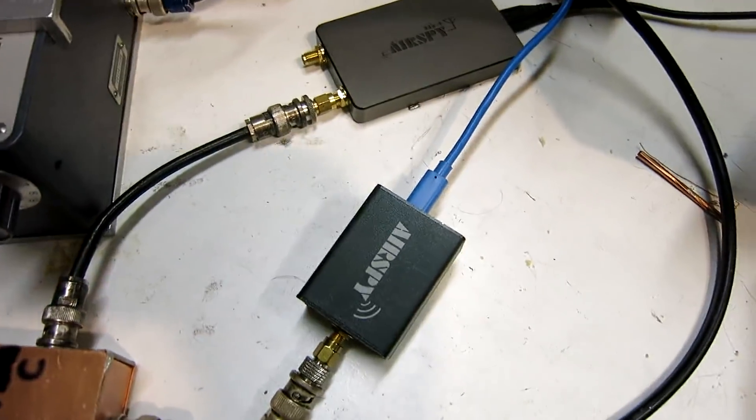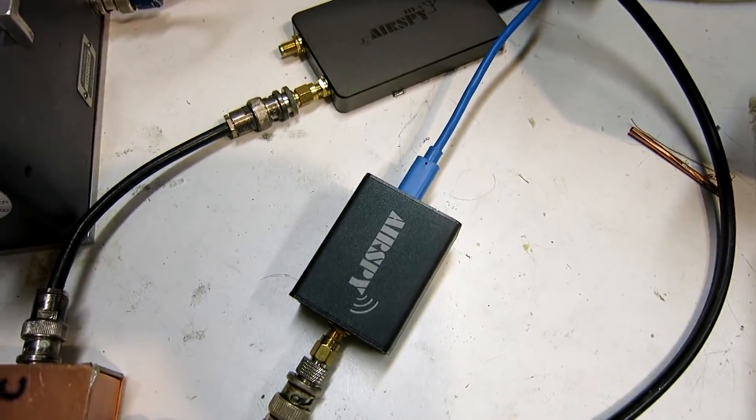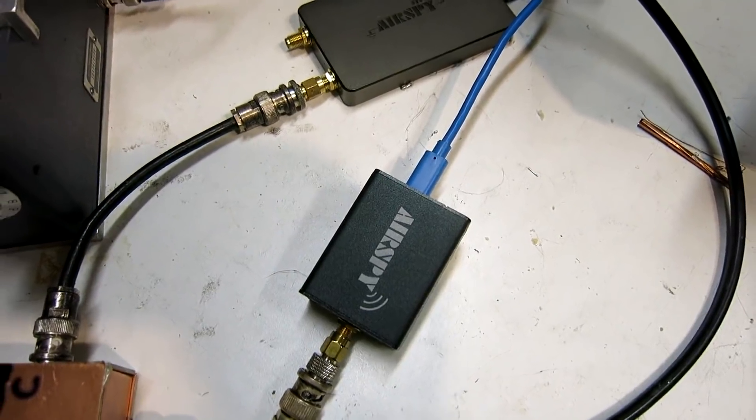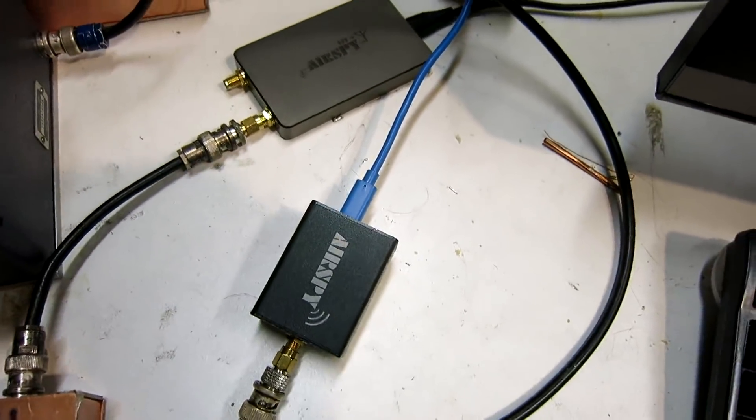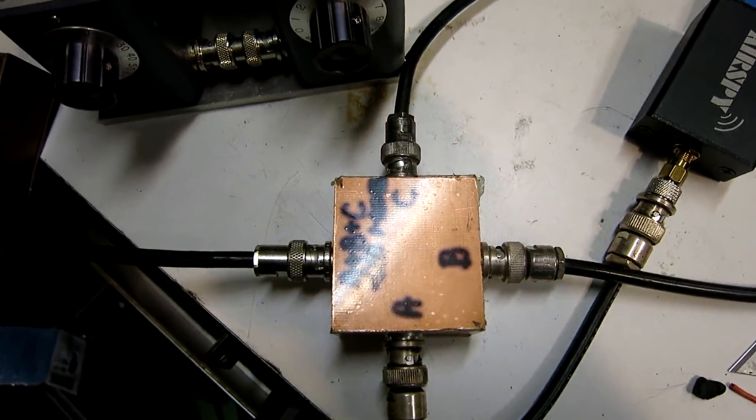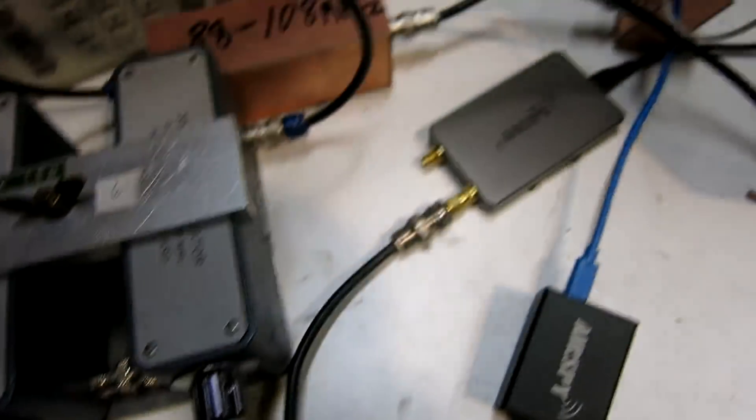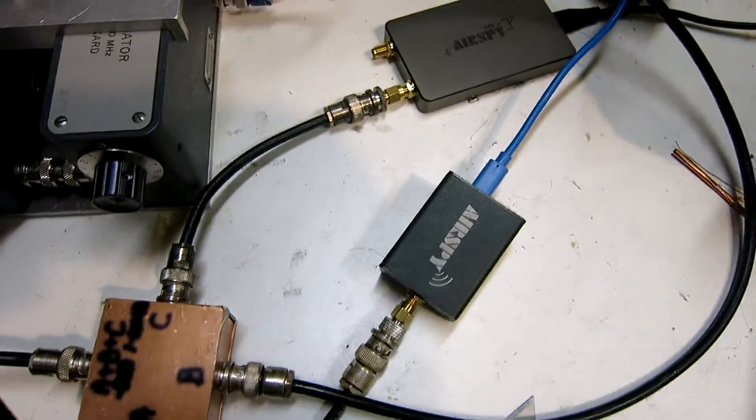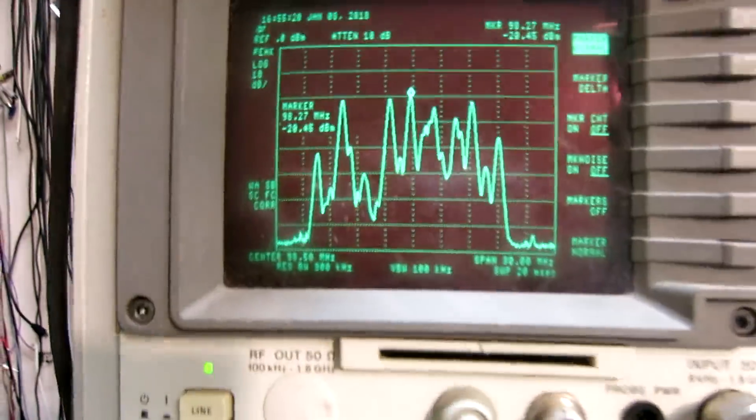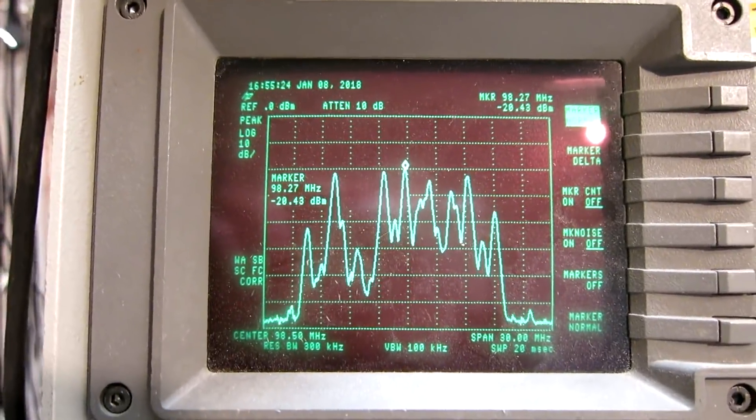The receivers are an AirSpy HF Plus and an AirSpy with an R820T dongle. They are fed from a three-port splitter hybrid, one into this radio and the other into the other radio. And the third port goes up into the spectrum analyzer.